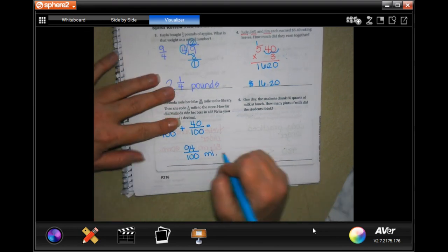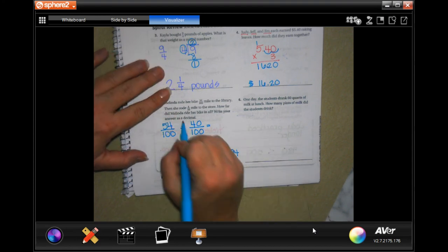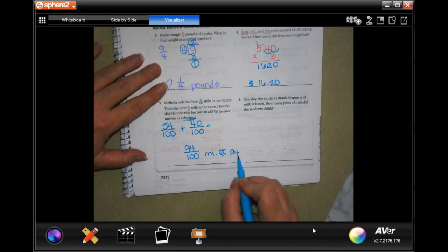You could also put 94, oh it says to write it in a decimal, so you need that 4 to be in the hundredths place, so 0.94 miles.